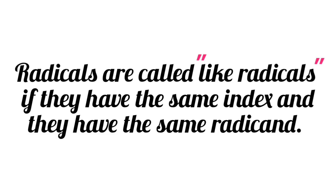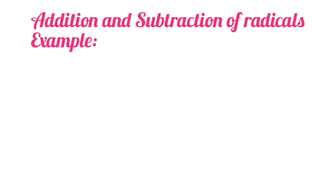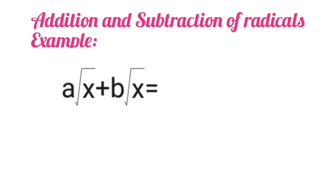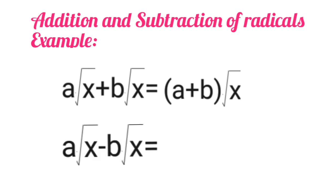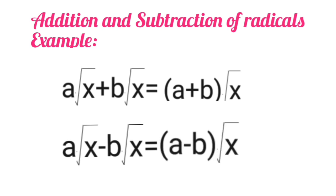Radicals are called like radicals when they have the same index and the same radicand. For addition and subtraction of like radicals: a times the square root of x plus b times the square root of x is equal to the sum of a and b, times the square root of x. And a times the square root of x minus b times the square root of x equals the difference of a and b, times the square root of x.